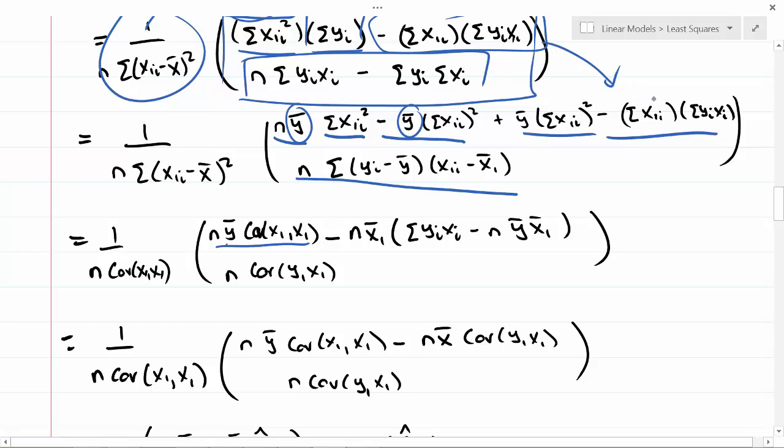Looking at this term, that is just a shortcut formula for the covariance between two vectors in the numerator. I can factor the y-bar out of these two terms, and that works out to just be the covariance of x with itself.